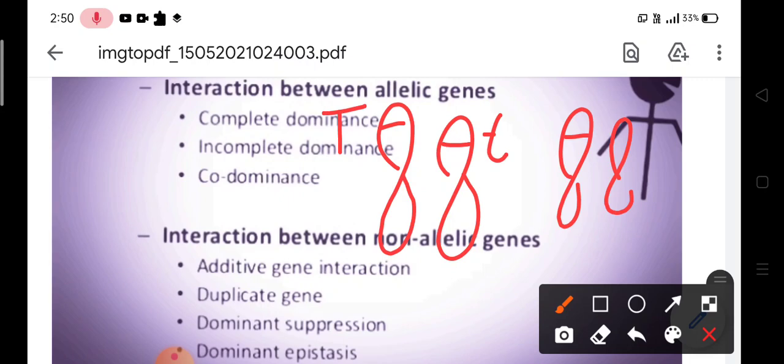And here in this chromosome we have W and small w. Now both these genes are present on different non-homologous chromosomes and they control different characters. This type of interaction is non-allelic gene interaction.